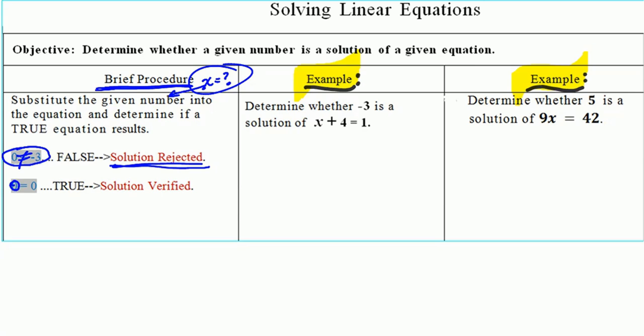If you simplify both sides of your equation once you substitute in, and you get an equality, for example zero equal to zero, you know that's a true statement, and you've verified your solution. Let's check out example a. Determine whether negative three is the solution of x plus four is equal to one.